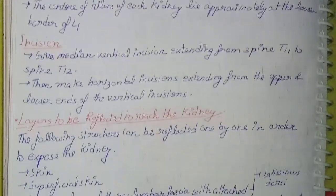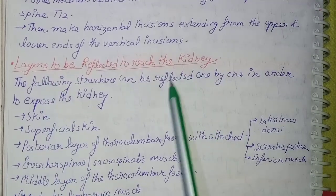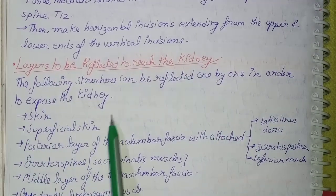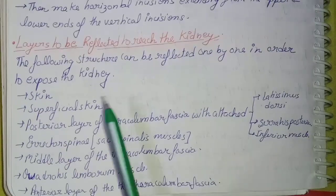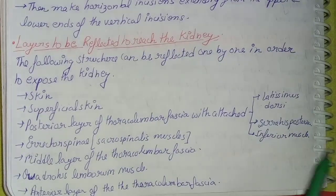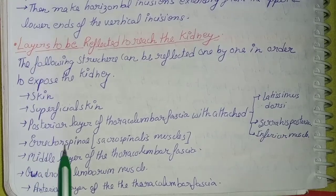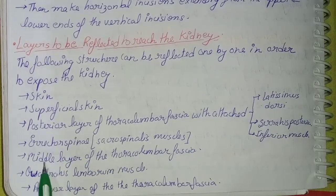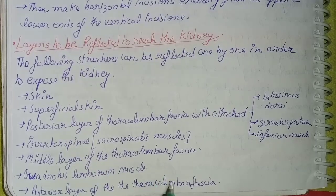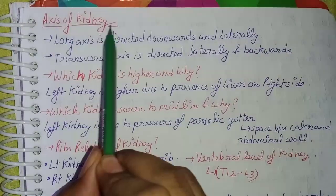Coming to the layers to be reflected to reach the kidney: the following structures are reflected one by one — skin, superficial fascia, posterior layer of thoracolumbar fascia (attached to latissimus dorsi, serratus posterior inferior, and erector spinae/sacrospinalis muscles), middle layer of thoracolumbar fascia, quadratus lumborum muscle, and anterior layer of thoracolumbar fascia.